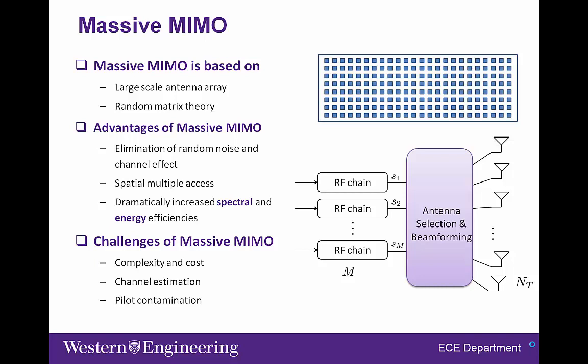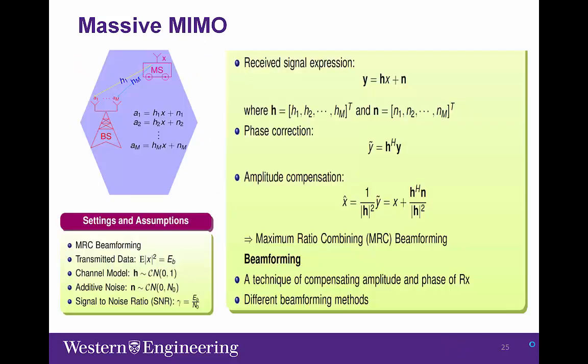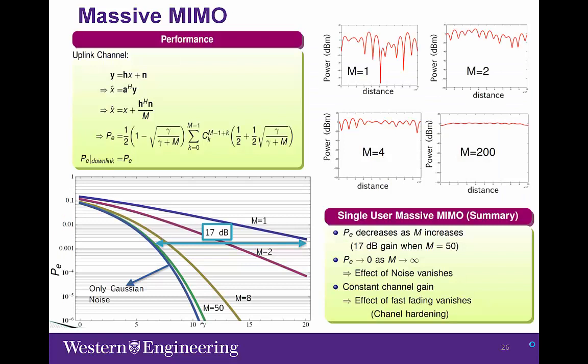The channel estimation procedure in massive MIMO could be much longer and complicated by pilot contamination. On this slide, we have a simple model for the massive MIMO system. As we can see, with increased antenna elements, the system performance in terms of bit error rate is dramatically reduced, and the impact of noise and channel is significantly reduced as well.